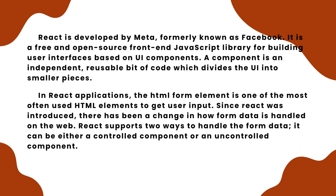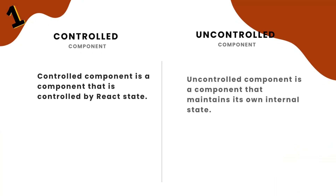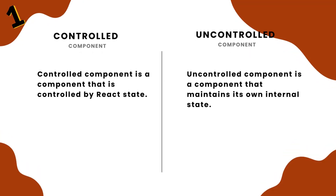Let's discuss the difference between controlled components and uncontrolled components. Number 1: a controlled component is a component that is controlled by React state, while an uncontrolled component is a component that maintains its own internal state.